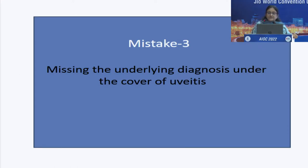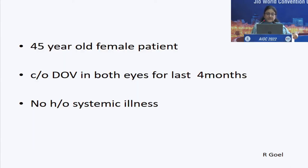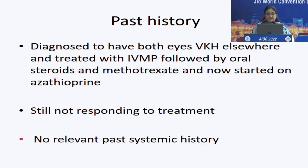The last mistake is missing the underlying diagnosis under the cover of uveitis. A 45-year-old female with diminution of vision in both eyes for last four months, no history of systemic illness. She was diagnosed with VKH elsewhere and was already treated with IV methylprednisolone and put on methotrexate and now azathioprine — still not responding, and came for a second opinion.